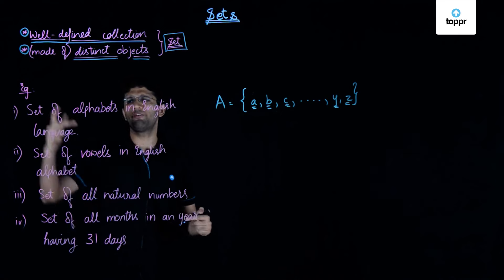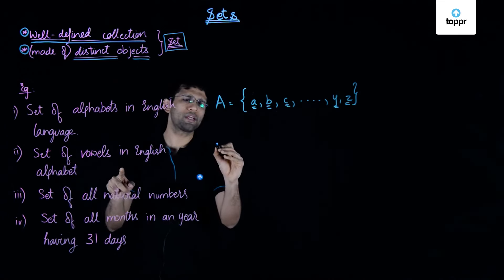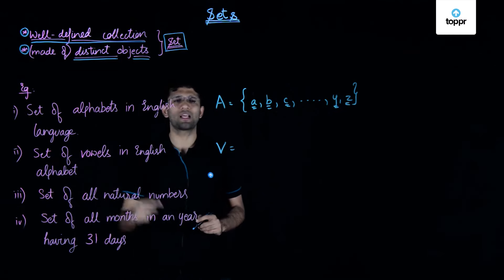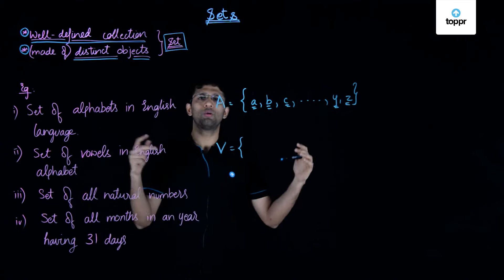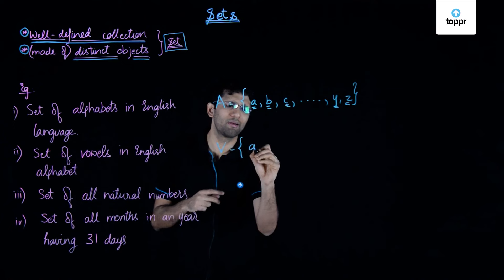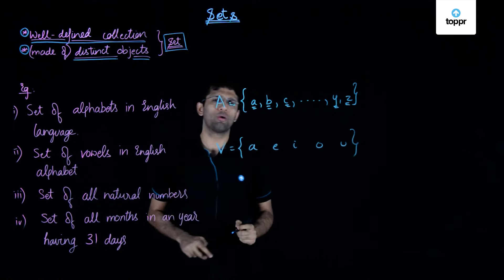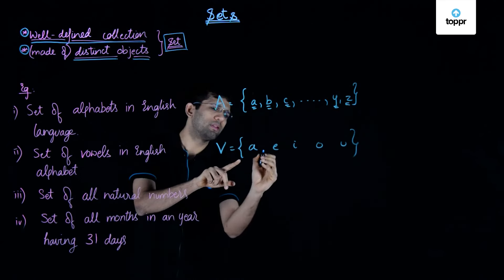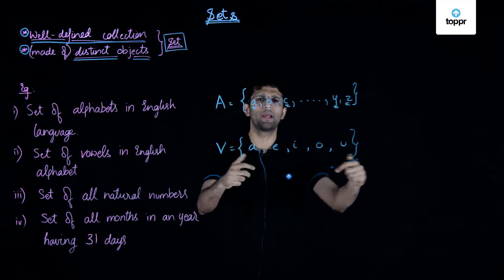In a similar manner, another example of a set can be the set of vowels in the English alphabet. We will represent this by capital letter V. Now, if we group all the vowels of the English alphabet together, we get A, E, I, O, and U. Sticking with the convention of representing a set, we separate all these elements by commas and enclose them within brace brackets.